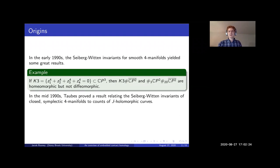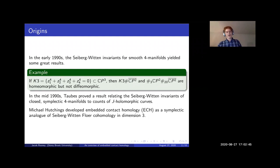And then in the mid-90s, Cliff Taubes proved a result relating these Seiberg-Witten invariants of smooth four manifolds in the case when the manifold's symplectic to counts of what are called J-holomorphic curves, which I'll explain in a little bit. And so embedded contact homology was developed by Michael Hutchings at Berkeley as a symplectic analog of three-dimensional Seiberg-Witten Floer cohomology, along the lines of Taubes' result on symplectic four manifolds and Seiberg-Witten invariants with J-holomorphic curves.